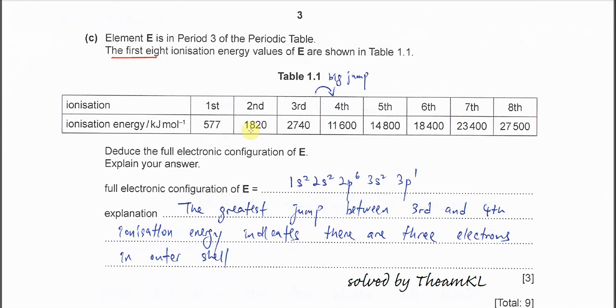So we will know how many valence electrons there. Okay, so from first to second is a small increase. Second to third also small increase. But from third to fourth is a big jump, from about 3K to 12K. So this one, therefore we know that it must have 3 valence electrons out there. Because these 3 electrons is relatively easier to remove. That's why it needs lesser IE. So from this big jump, we know that it must be group 13. Because it has 3 valence electrons. Since we know that this one is period 3, so it must be this electron configuration: 1s2, 2s2, 2p6, 3s2, 3p1.